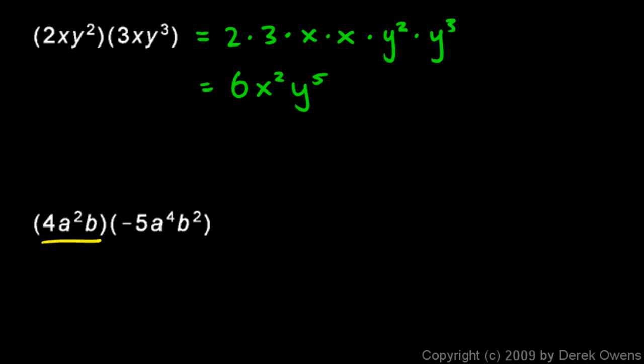Now this next one, 4a squared b times negative 5a to the fourth b squared. Let's do the same thing. Let's rearrange it. Let's put the numbers first.